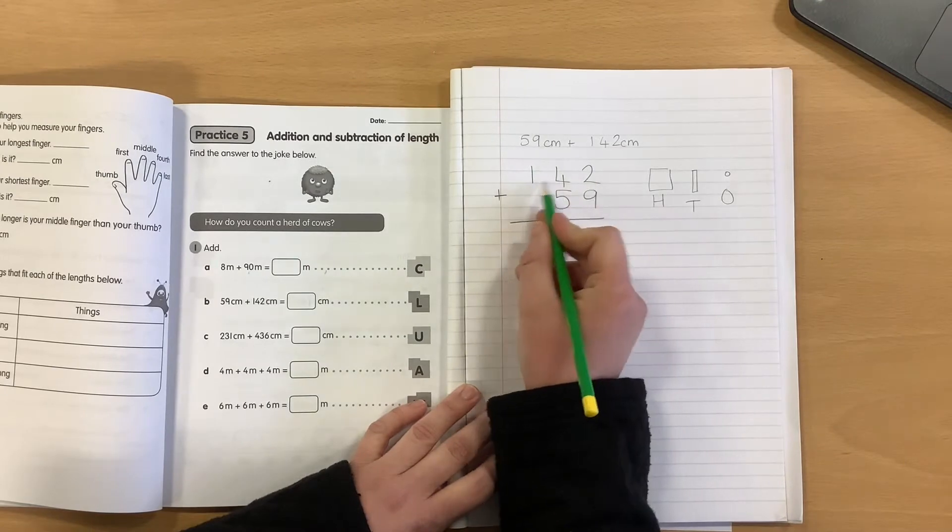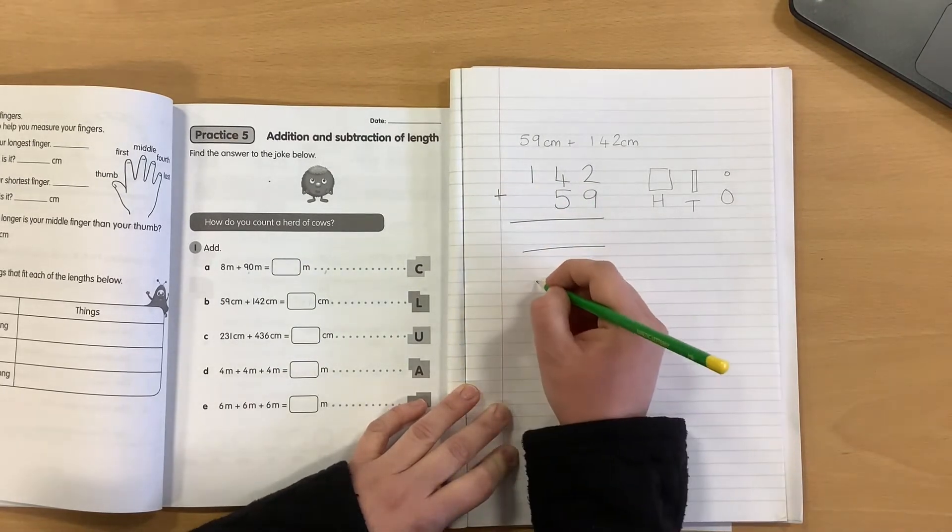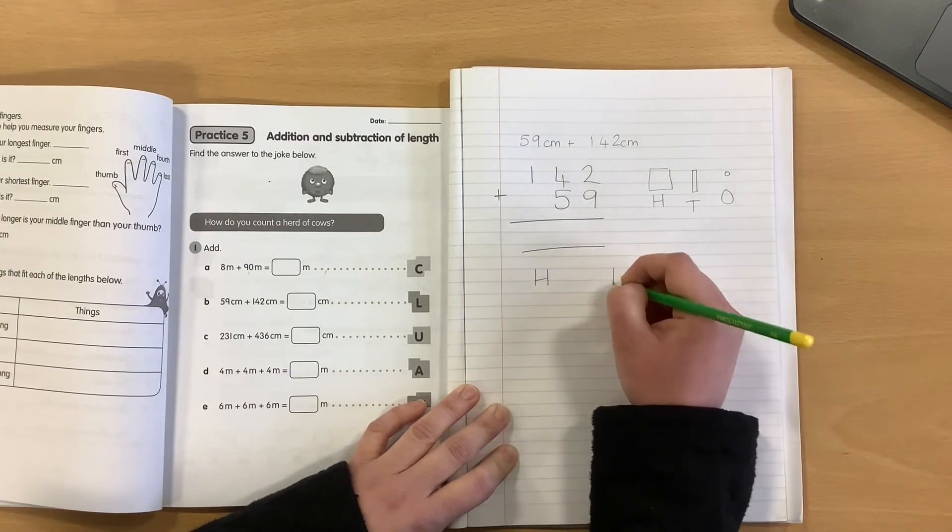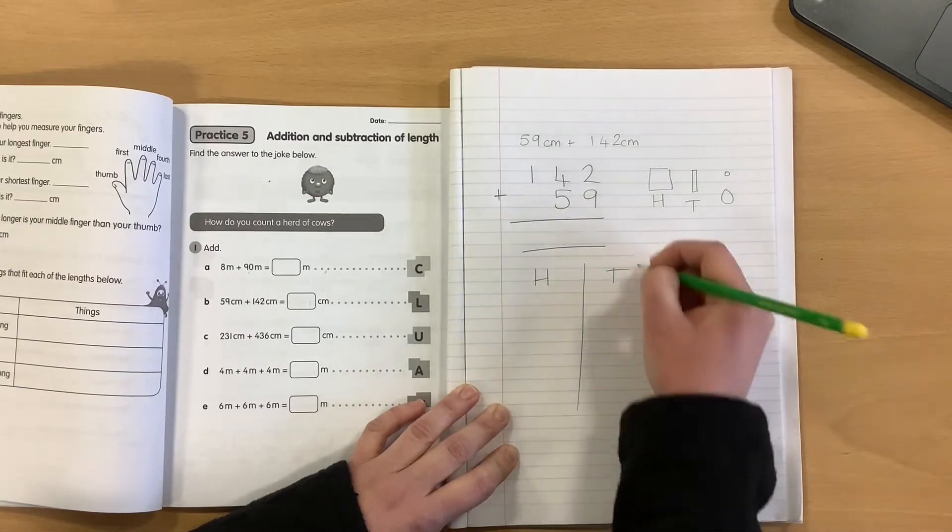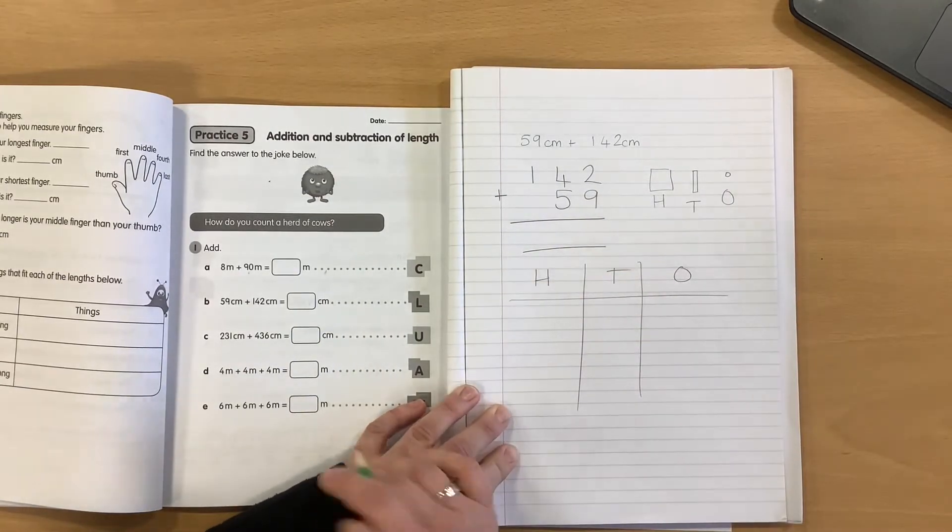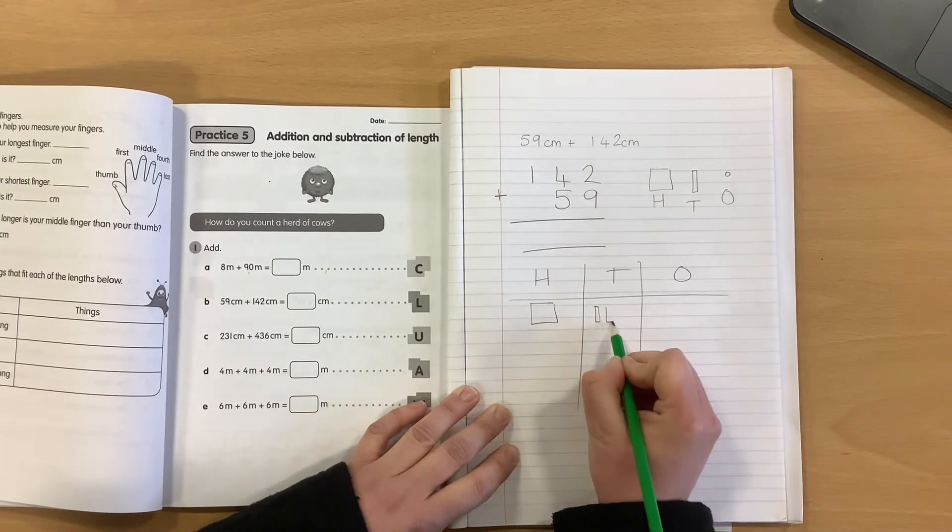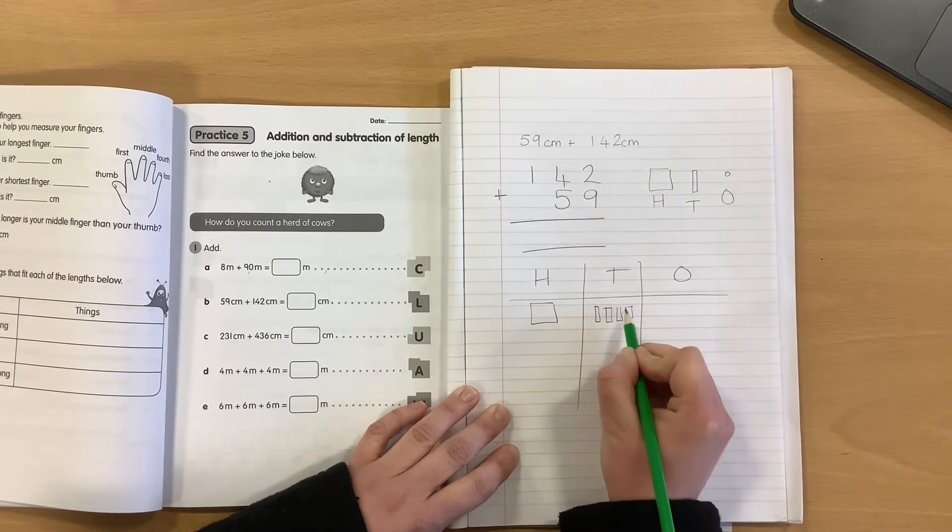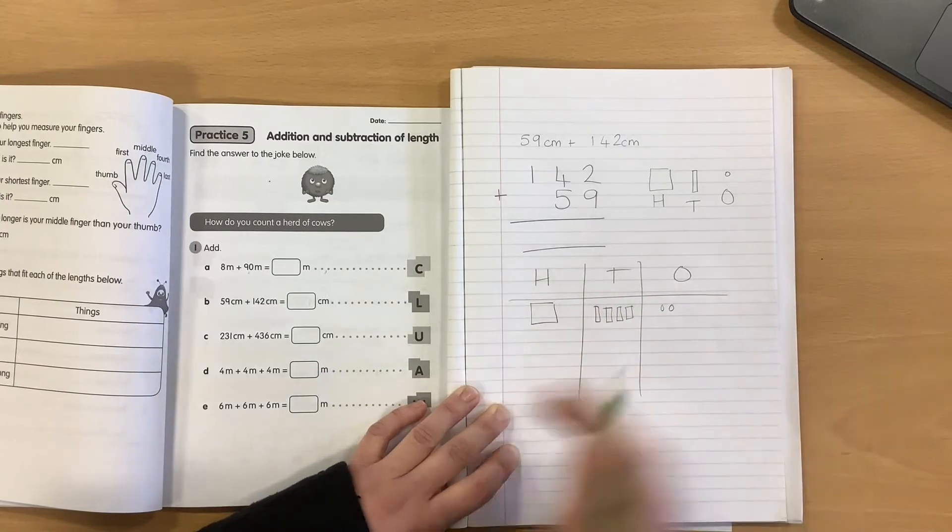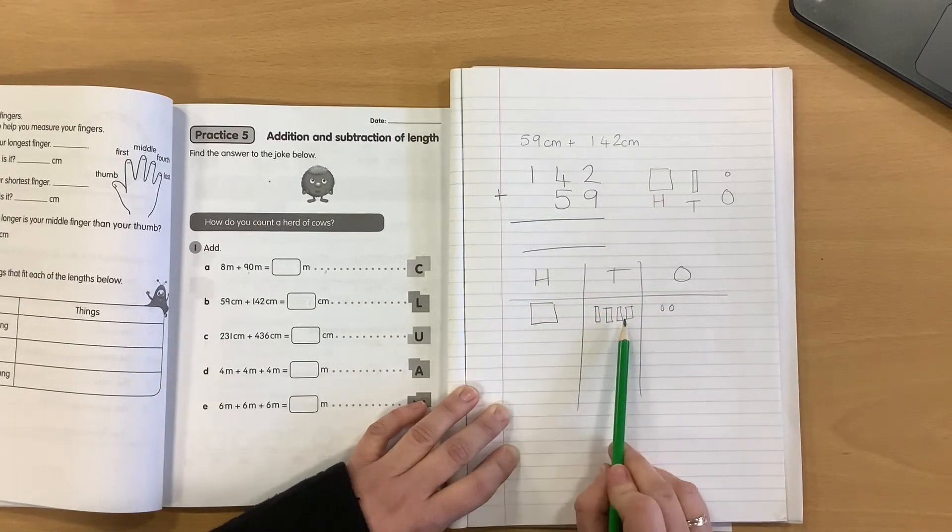I'm going to start off by drawing my larger number. So, I have my hundreds, tens, and ones, and in my hundreds column for 142, I have 100. I have four tens, and I have two ones. So, I have there, I've represented 142.